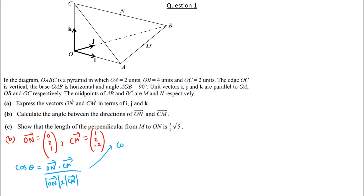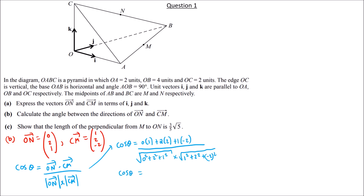cos θ = (0×1 + 2×2 + 1×(−2)) / (√(0² + 2² + 1²) × √(1² + 2² + (−2)²)) = (0 + 4 − 2) / (√5 × √9) = 2 / (√5 × 3).